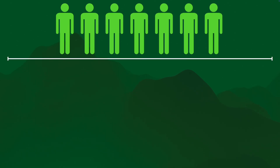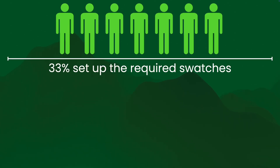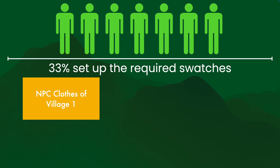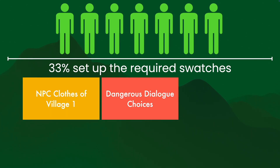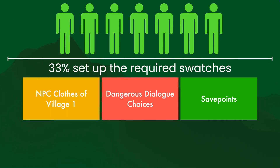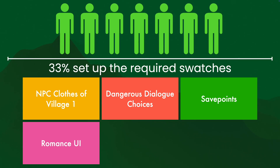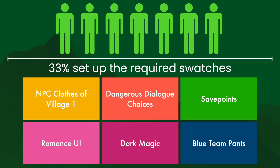If we have those, we're a lot of the way there. Because in that case, these artists can set up the required swatches — for example, for the NPC clothes of Village 1, or dangerous dialogue choices, or save points, or the romance UI, or dark magic VFX, or maybe the blue team pants.